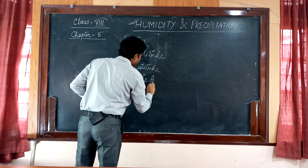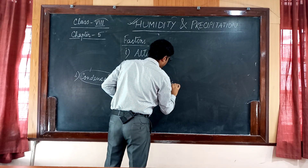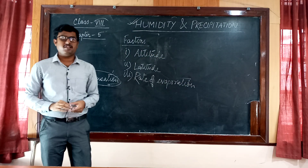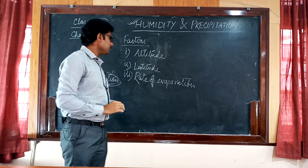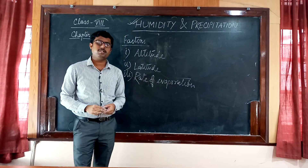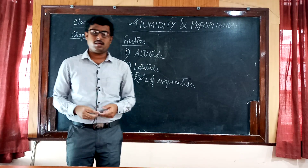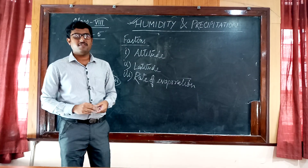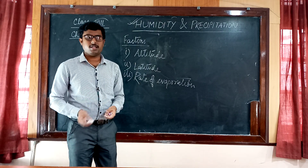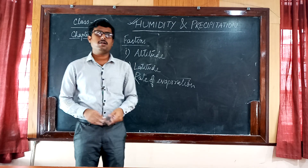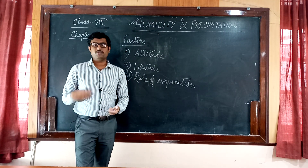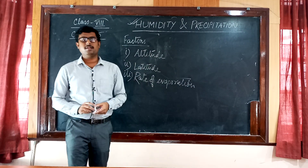The third factor is rate of evaporation. The rate of evaporation will also affect the amount of humidity of a place. Where the evaporation rate is high — obviously near the equator or near the tropical region — it will affect the amount of humidity in the air.